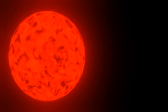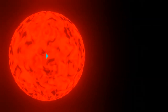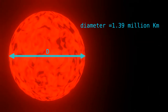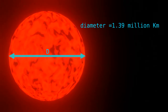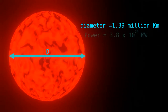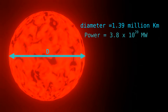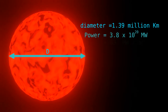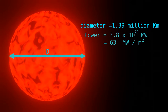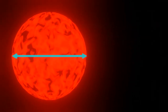The sun is a sphere of very hot gases with a whopping diameter of 1.39 million kilometers. It emits a massive amount of energy, estimated to be 3.8 times 10 to the power of 20 megawatts, or in other words, 63 megawatts per each square meter of its surface.